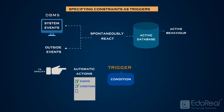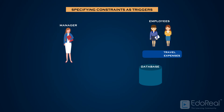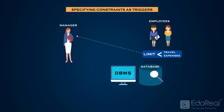A trigger contains a condition. If the condition is violated, some user needs to be informed. A manager might want to be notified if an employee's travel expenses exceed a certain limit by receiving a message whenever it occurs. Whenever the condition fails to be satisfied, the DBMS initiates the action to send an appropriate message to the manager.